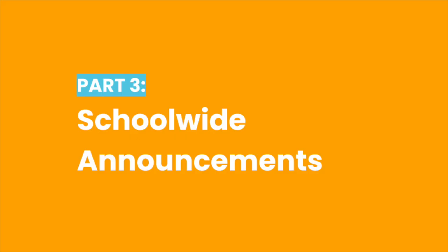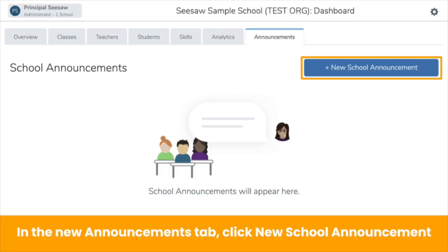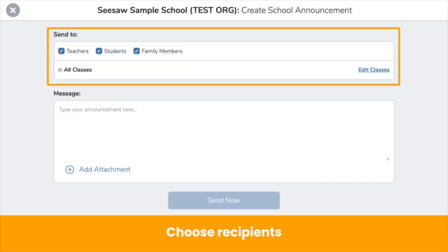We are now going to explore school-wide announcements, a new feature for the 2020 school year. School-wide announcements go beyond event reminders and other logistics — your superpowers become even stronger because it becomes even easier to communicate, share, and engage with your entire school community. You will see the new announcement tab on your admin dashboard. You are able to send announcements to any combination of teachers, students, and families by class in a school. If you want to send an announcement to all third grade students, you would check Students, then edit classes to choose third grade classes.